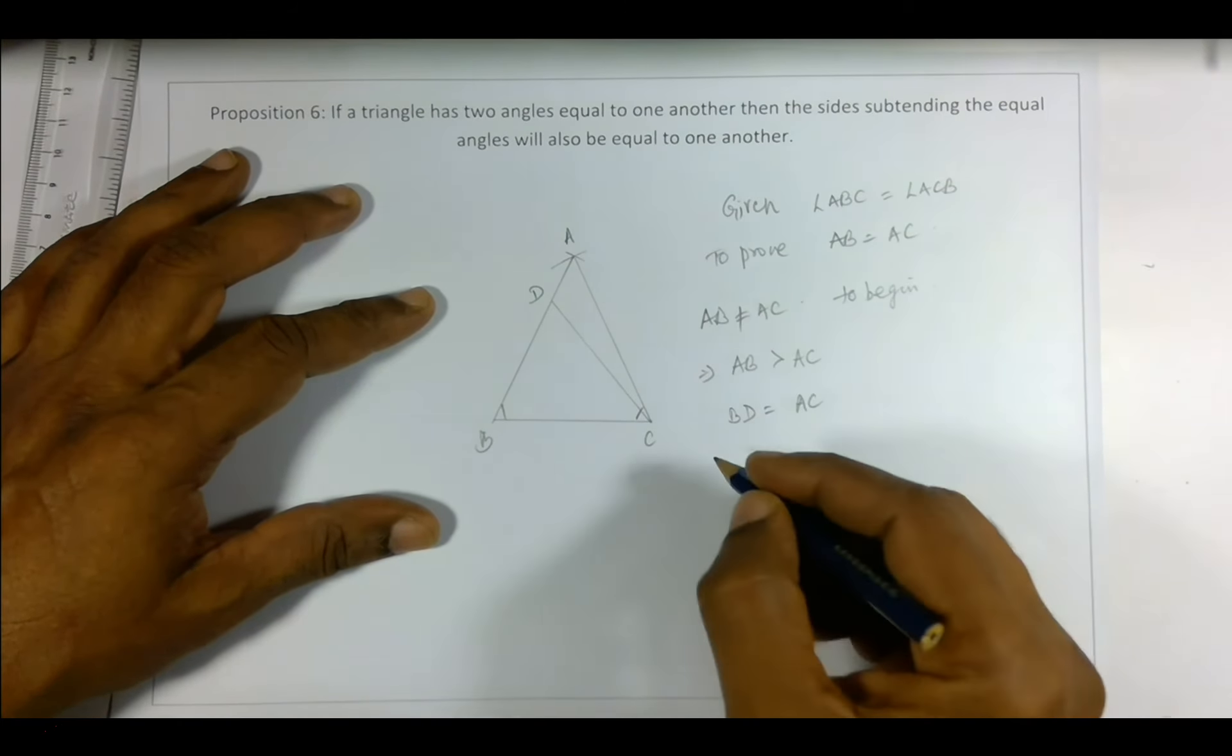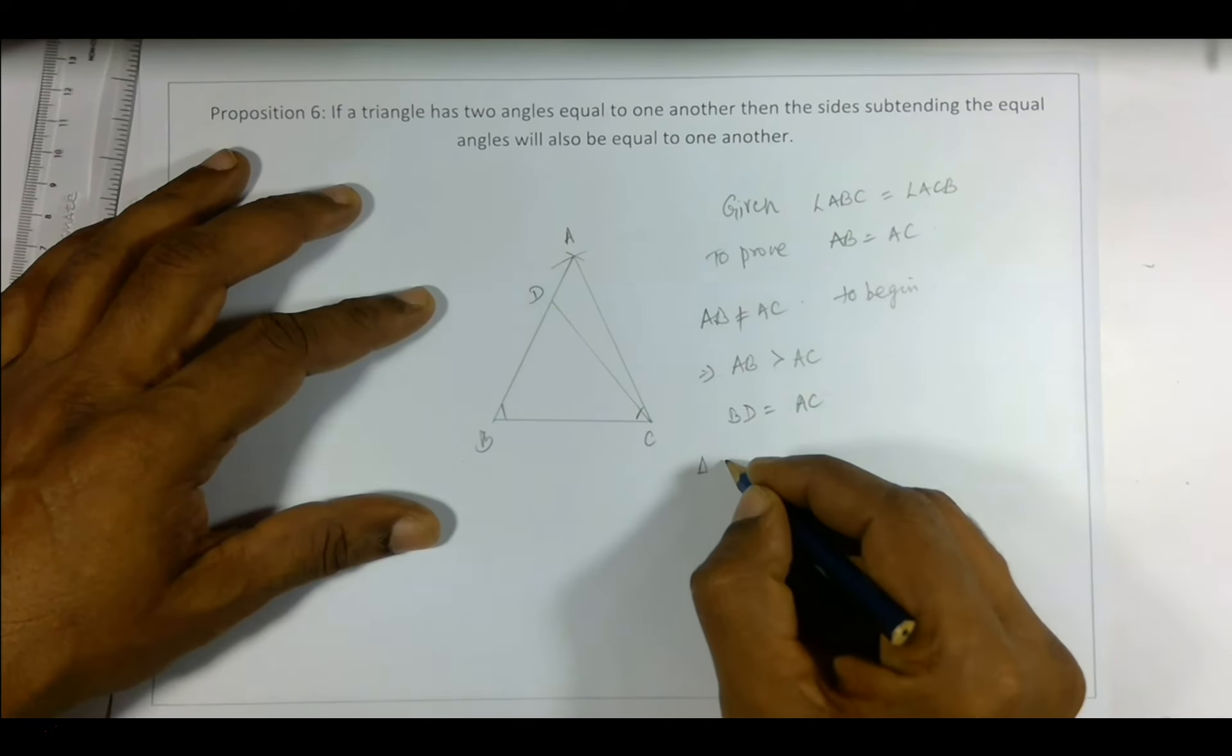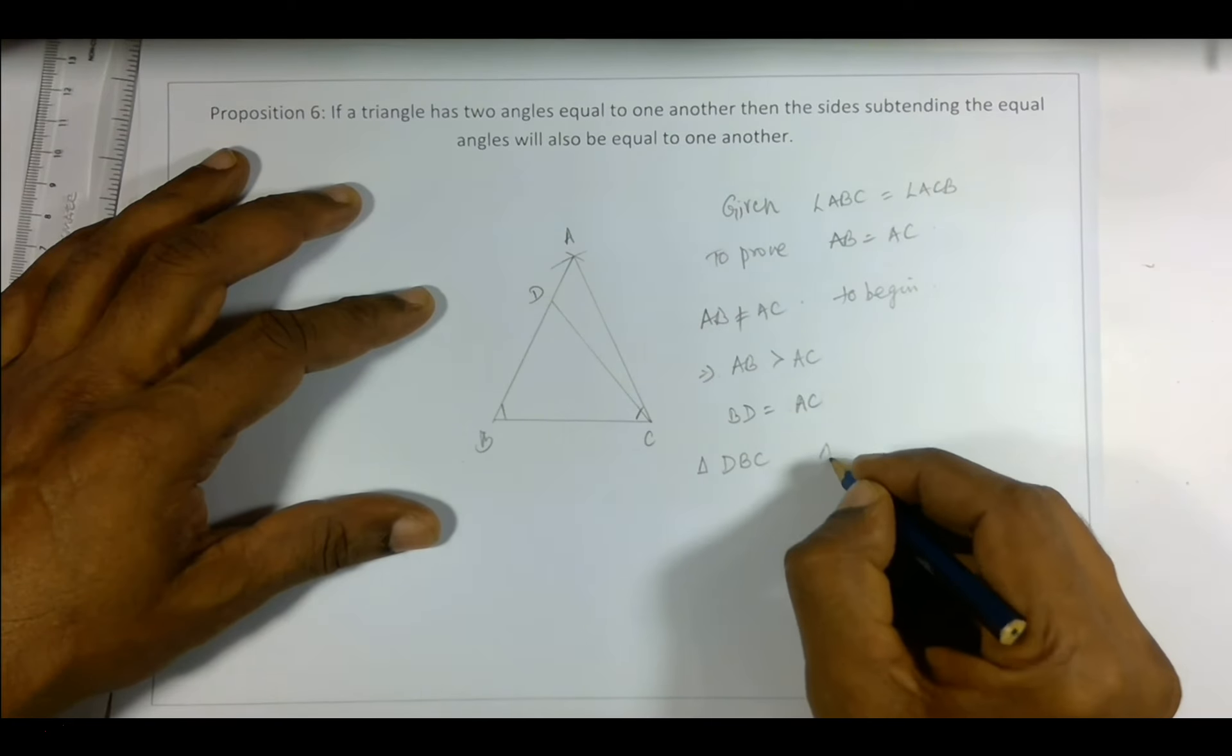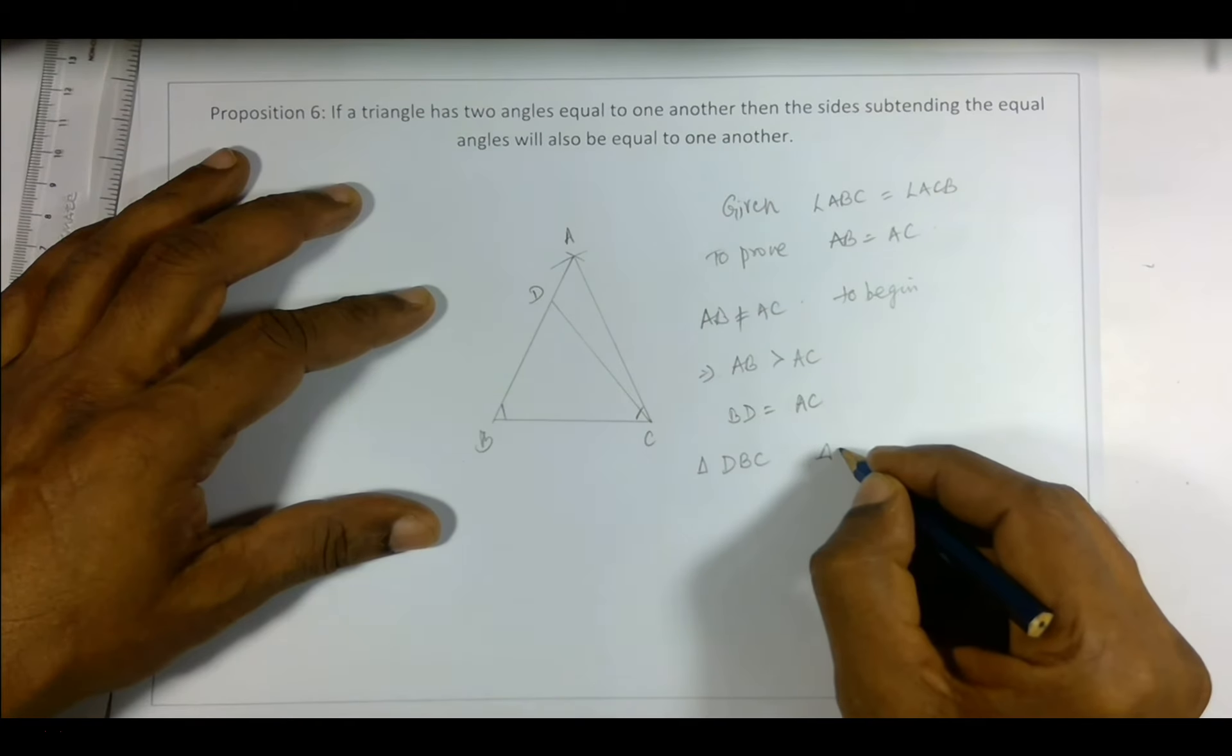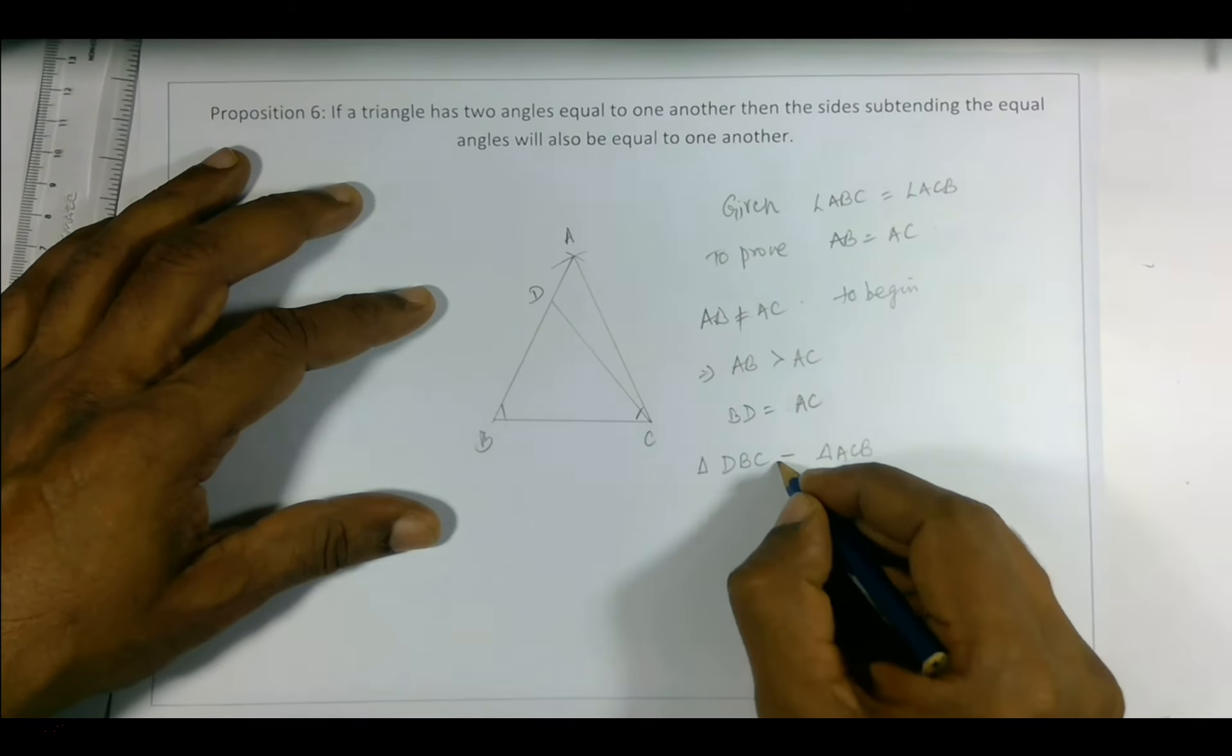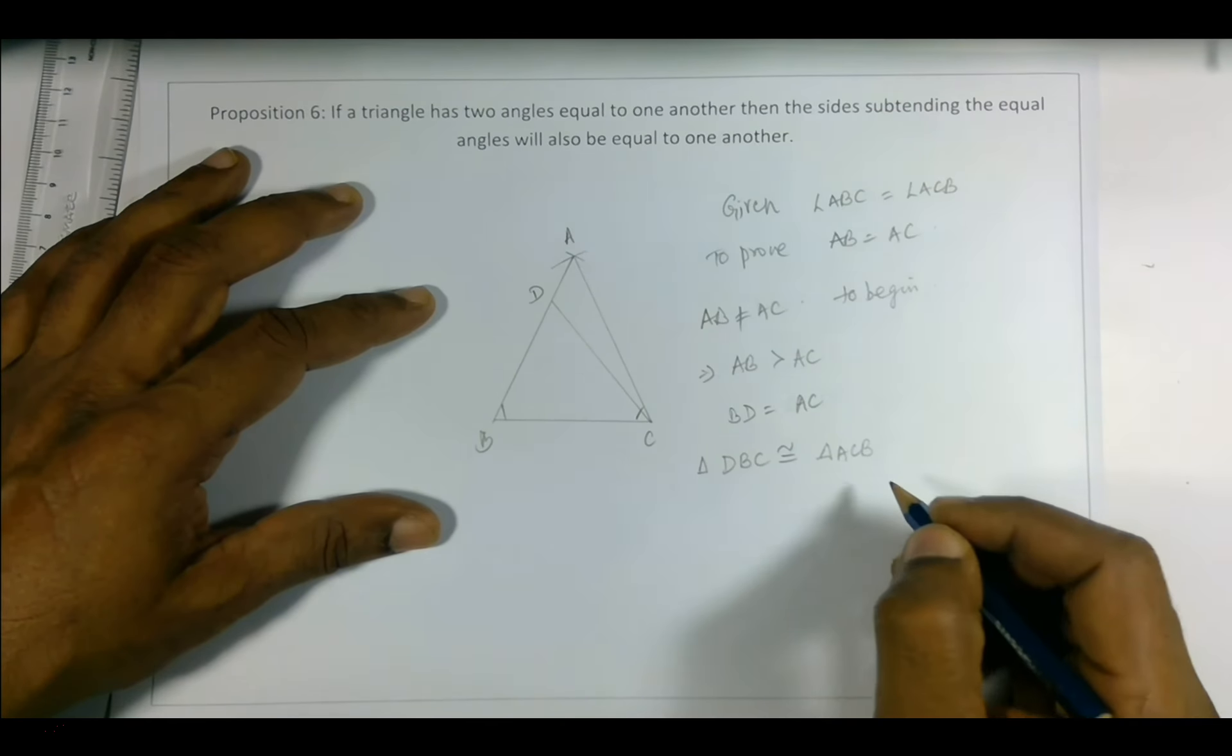Now let's look at these two triangles. Which triangles? Triangle DBC and triangle ACB. Now these two are congruent.